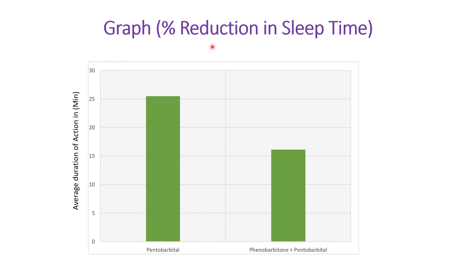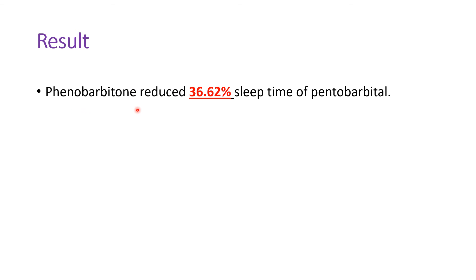We will now plot a graph showing the percent reduction in sleep time. Without phenobarbital, the average duration of action is around 25.50 minutes. When pentobarbital is given in the presence of the enzyme inducer phenobarbital, the duration of sleep reduces to 16.16 minutes. The result: phenobarbital reduced the sleep time of pentobarbital by 36.62%. This concludes our experiment. Thank you.